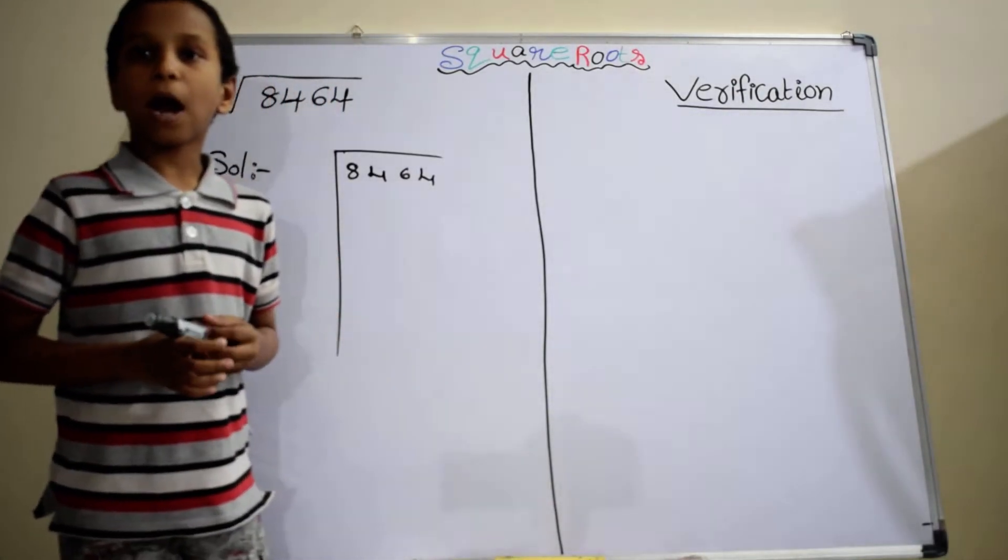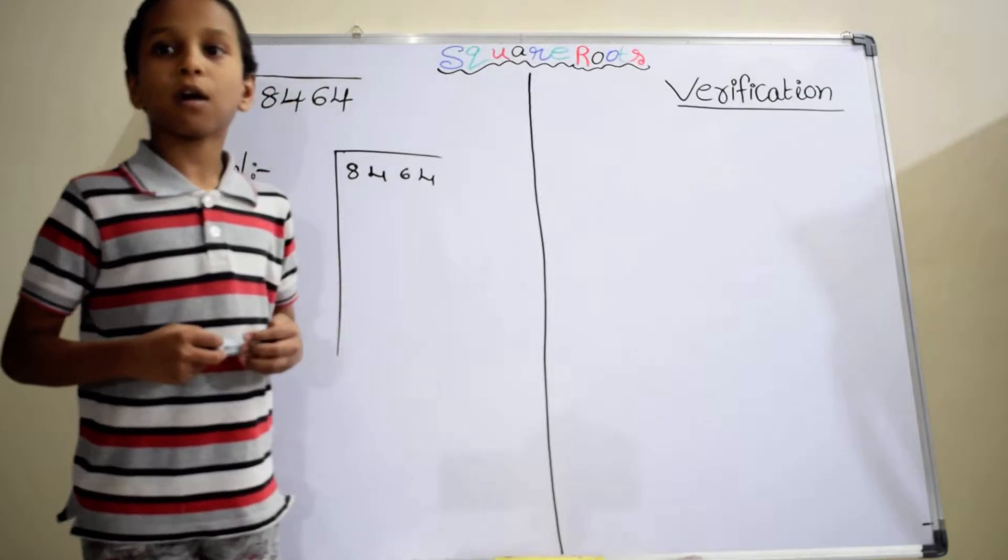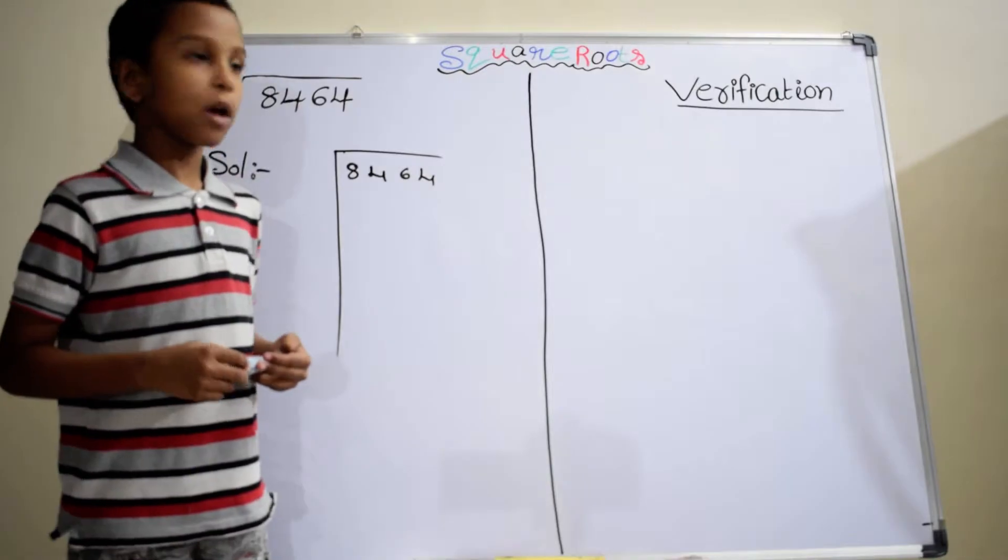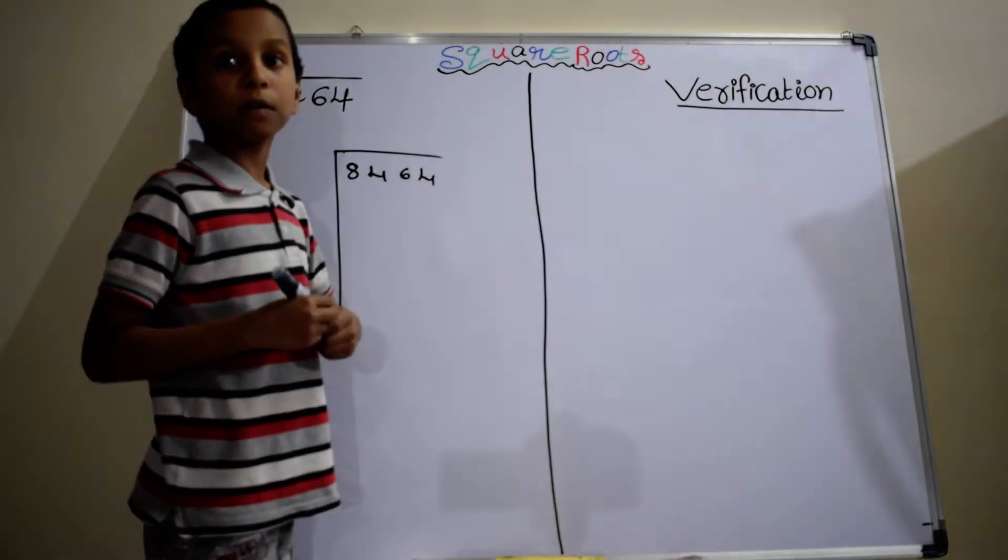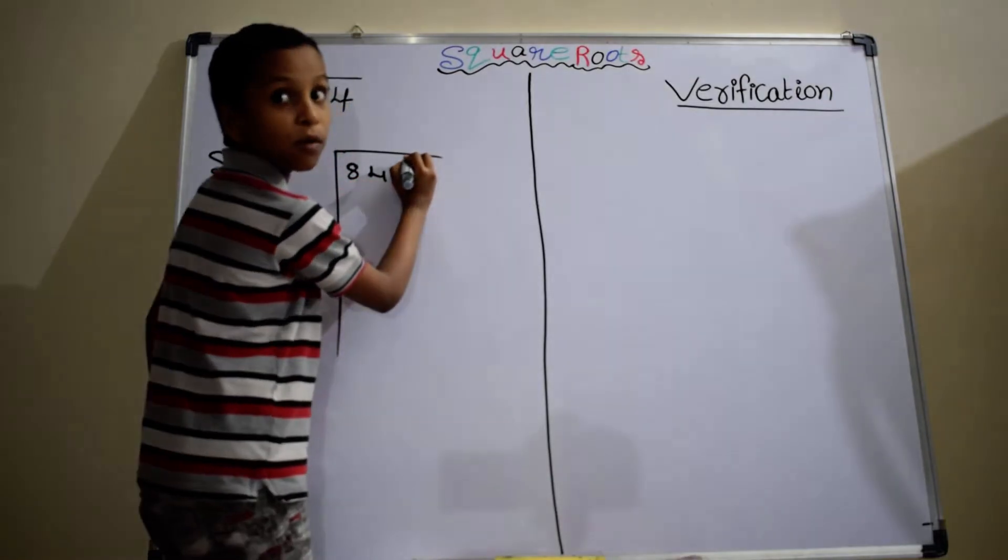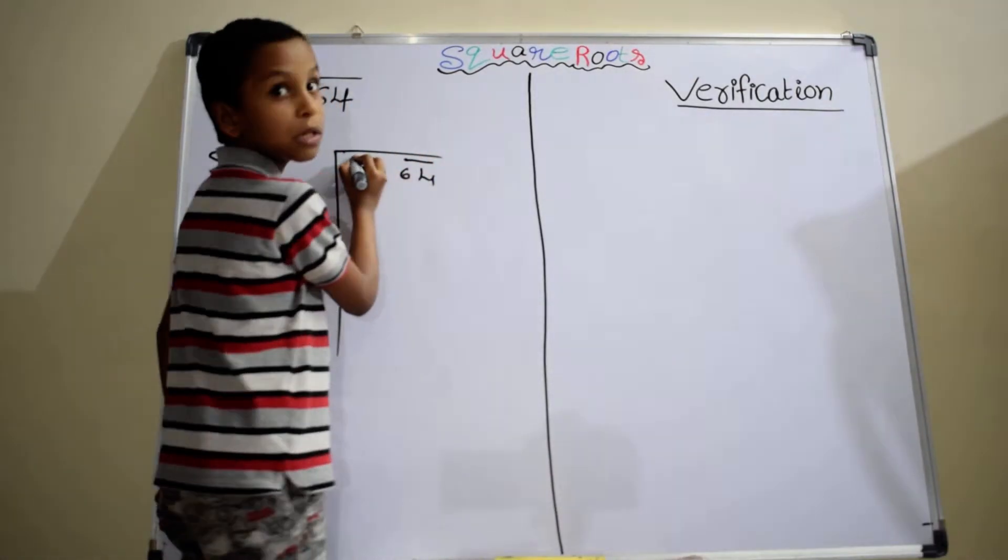As part of finding a square root, in the first step, we have to take pair of digits from right to left. This is first pair, this is second pair.